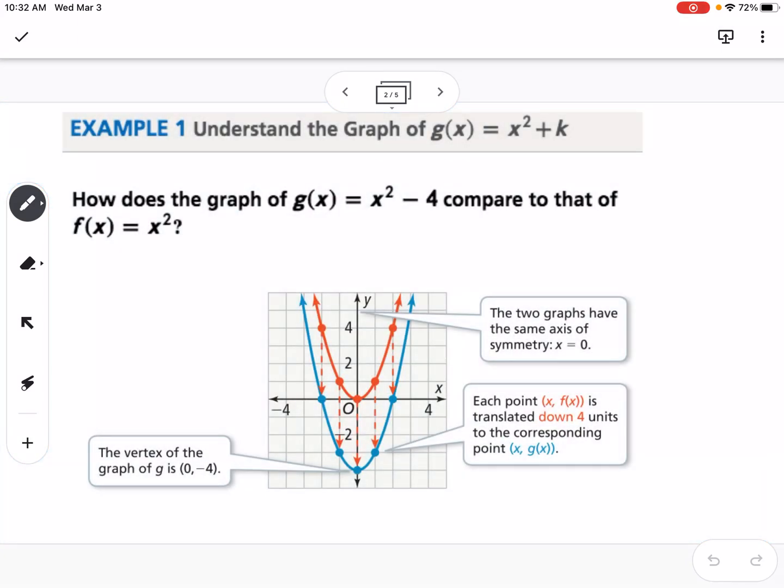So vertex form, we're going to kind of build up to our final vertex form. We're going to first look at what does the k do to our graph. So understanding the graph of g(x) = x² + k. You can see from the picture here that if we have x² - 4, our original graph is the red graph, and our new graph is the blue one. So that's going to shift the graph down 4.